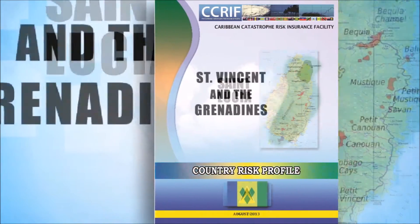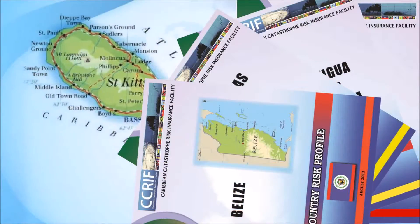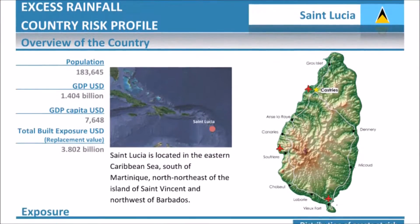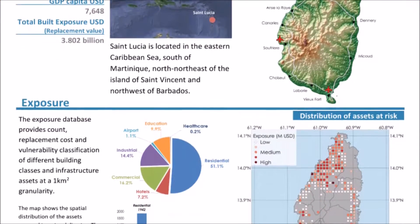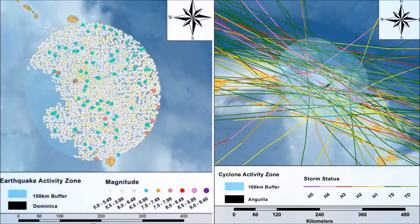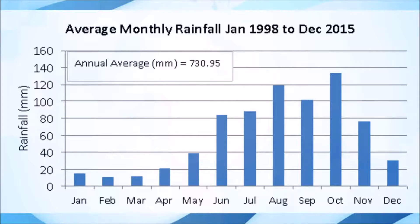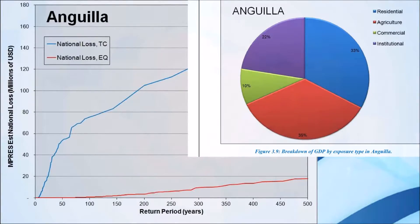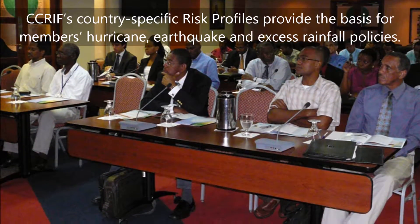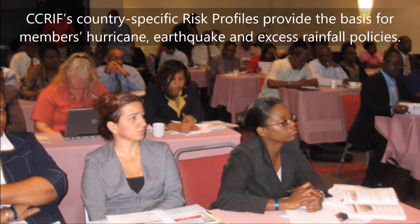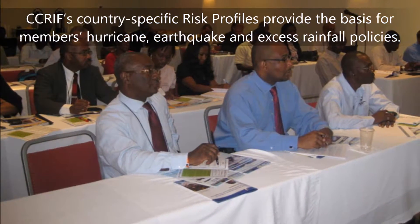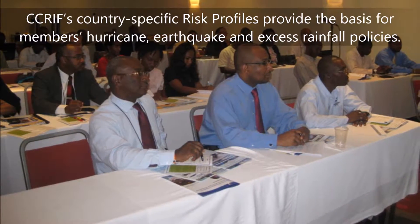CRIF prepares these profiles for tropical cyclones and earthquakes, as well as for rainfall, for member countries. The profiles provide detailed information on the catastrophe risk modeling platforms used to underpin CRIF policies, including an outline of the earthquake, tropical cyclone, and rainfall characteristics and risks for the country, as well as economic loss information used by the models. The profiles are aimed at providing decision makers with a clear picture of the key risks a country faces, in order to guide national catastrophe risk management and inform decision making for both risk reduction and risk transfer via CRIF coverage and other available mechanisms.